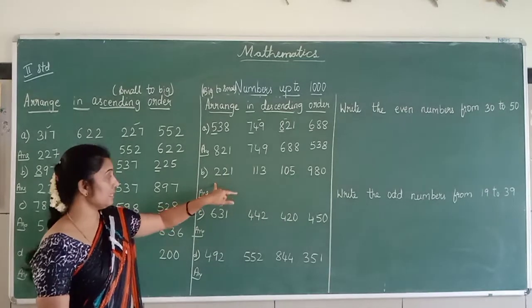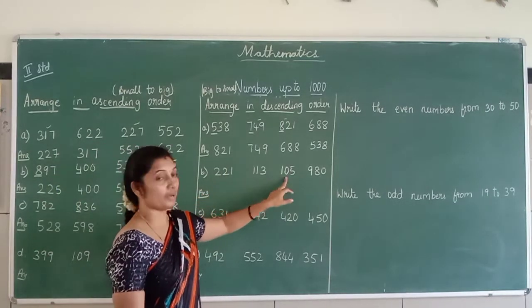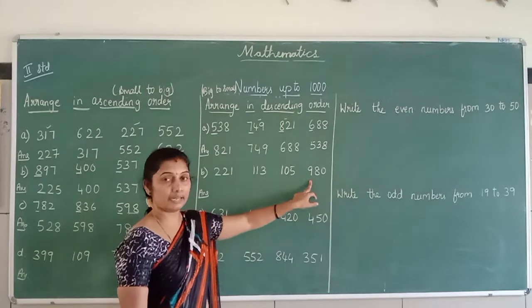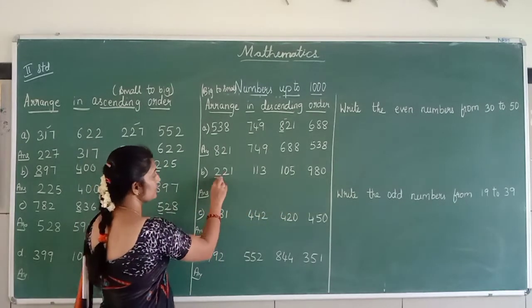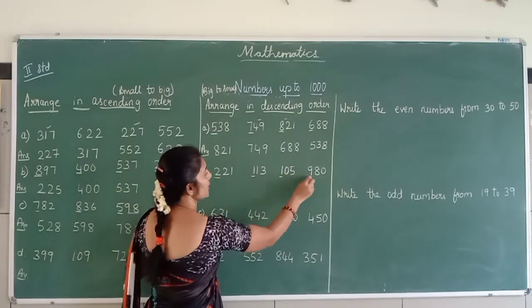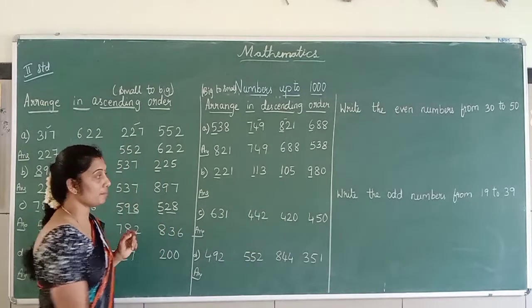So next, it is 221, 113, 105, and 980. So let me see which is the bigger? 2, 1, 1, 9. So the bigger number is 980.